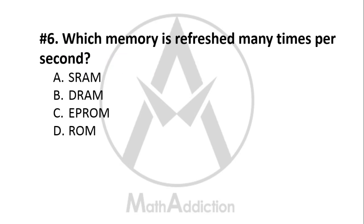Question No. 6: Which memory is refreshed many times per second? Options: A. SRAM, B. DRAM, C. EPROM, D. ROM. The right answer is Option B — DRAM. Dynamic Random Access Memory (DRAM) needs to be refreshed many times every second to retain its data.